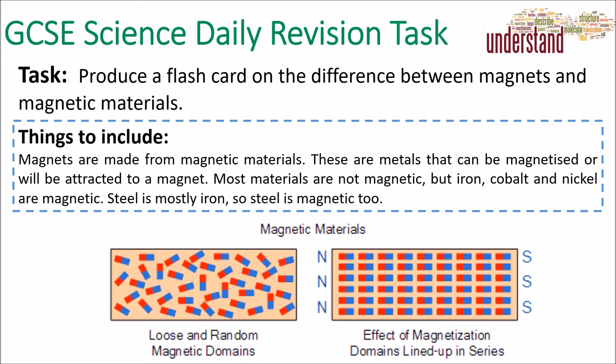It's probably important to be able to recognize a diagram like the one below. Each atom within a magnet has magnetic domains — one half will be north, one half will be south. You can almost think of them as like mini magnets.